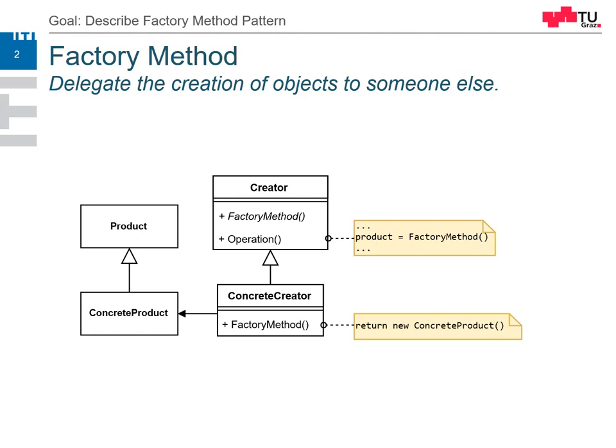So we want to create a concrete product but we don't want to bind our clients directly to this object type. So we create an interface product and we create a factory method or a template to create this product — just the interface. Then we derive from this creator a concrete creator, a concrete factory object which has a concrete product.